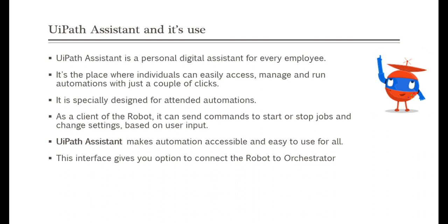As a client of the robot, UiPath Assistant can send commands to start or stop jobs and change settings based on user inputs, making automation accessible and easy to use for all. This interface also gives you the option to connect the robot to Orchestrator, so whenever you publish a package and deploy it, you can see those processes and automations in UiPath Assistant and directly run, start, or stop those jobs. There are also personal automations available — things like sending an email, setting up a reminder, or doing small day-to-day tasks. You can even create these small automations, store them in your personal workspace, and run them from UiPath Assistant.